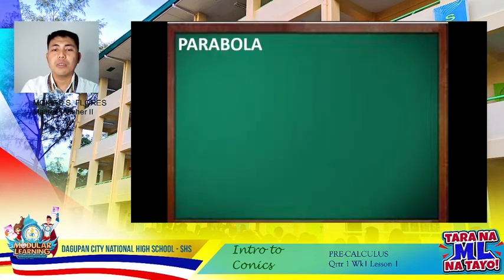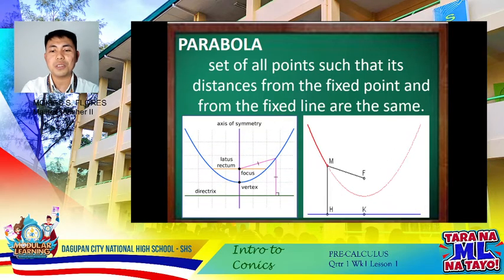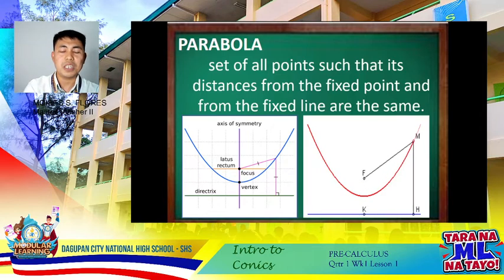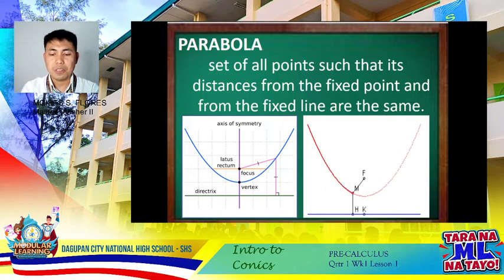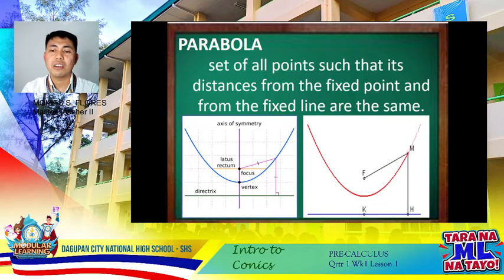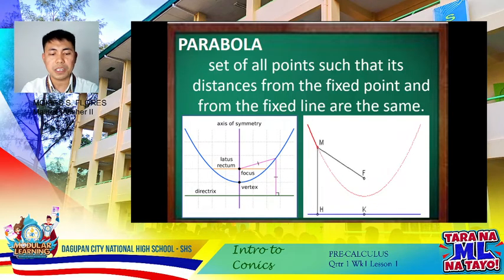A parabola is the set of all points such that its distances from a fixed point and from a fixed line are the same. The fixed point is called the focus of the parabola, denoted F. The fixed line is called the directrix. There are also additional terms: axis of symmetry, vertex, and latus rectum, which will be discussed further in our succeeding lessons.